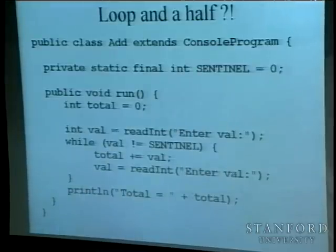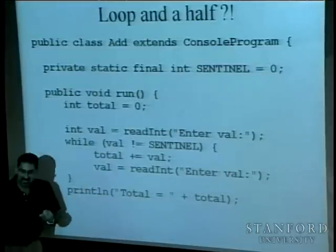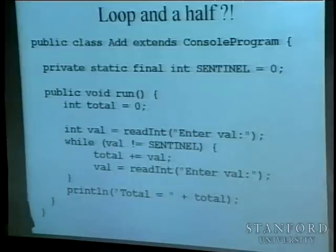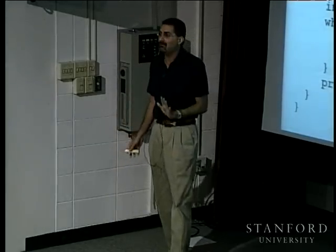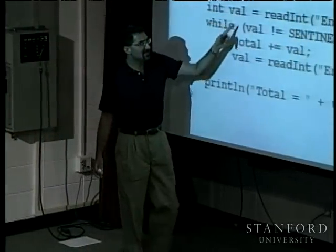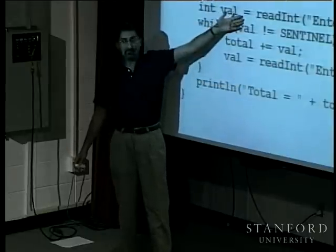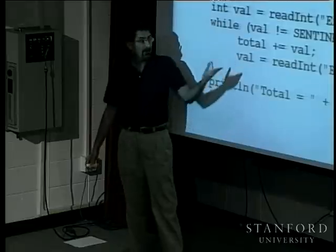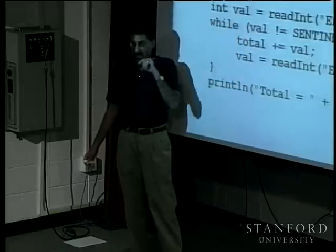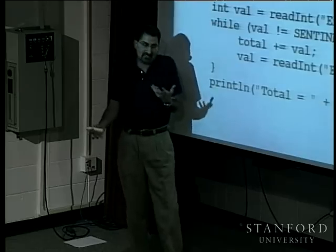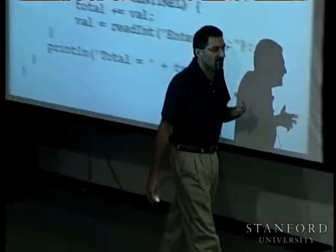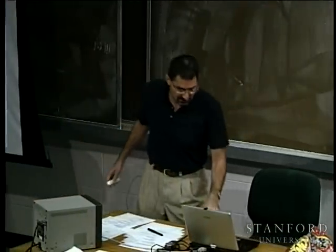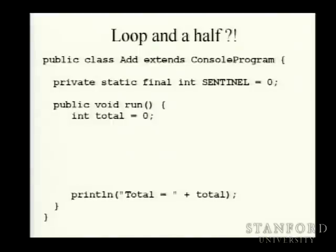The problem is the duplicated read-integer line. The way around this is the loop and a half: we pop out that duplicated code and restructure using `while (true)`. You see that and think — oh no, infinite loop! Any time you see while-true you think bad times. But there's a caveat.